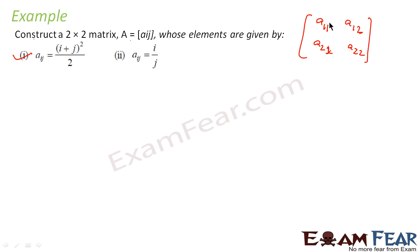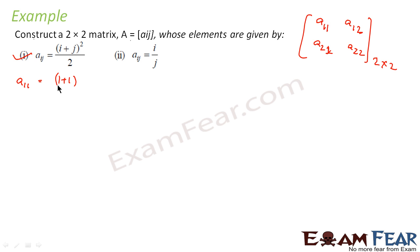A matrix is written starting with a1, a2, till am, and then a2, a3, till an. This is a 2×2 matrix: 2 horizontal rows and 2 vertical columns. Now, a11 will be (1+1)² / 2 — putting i=1 and j=1 — that is 2² / 2 = 4/2 = 2. So a11 is 2.